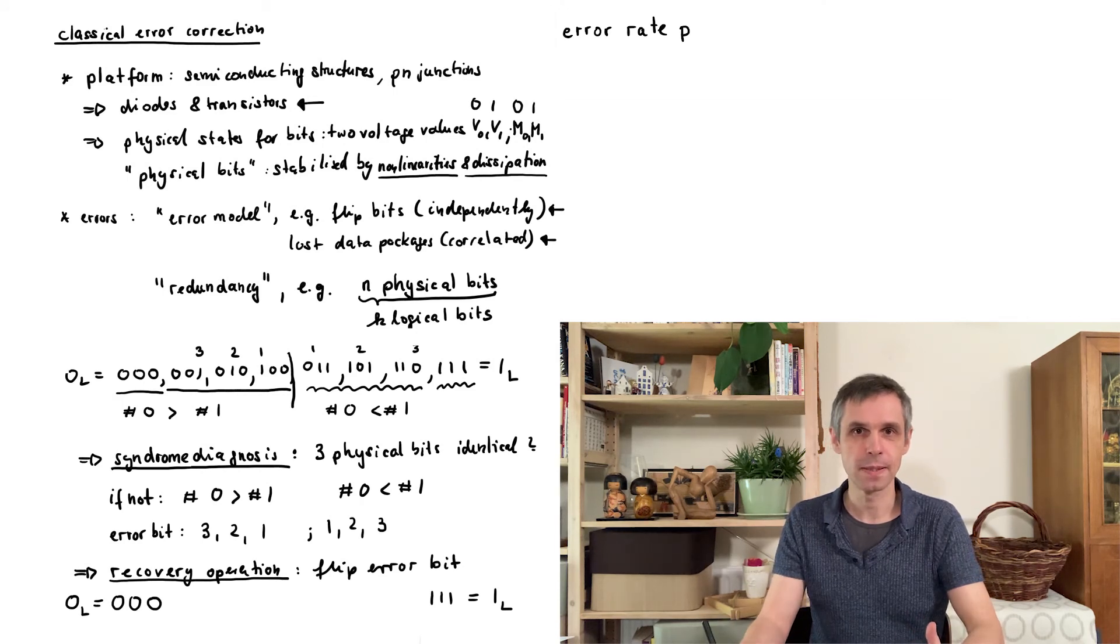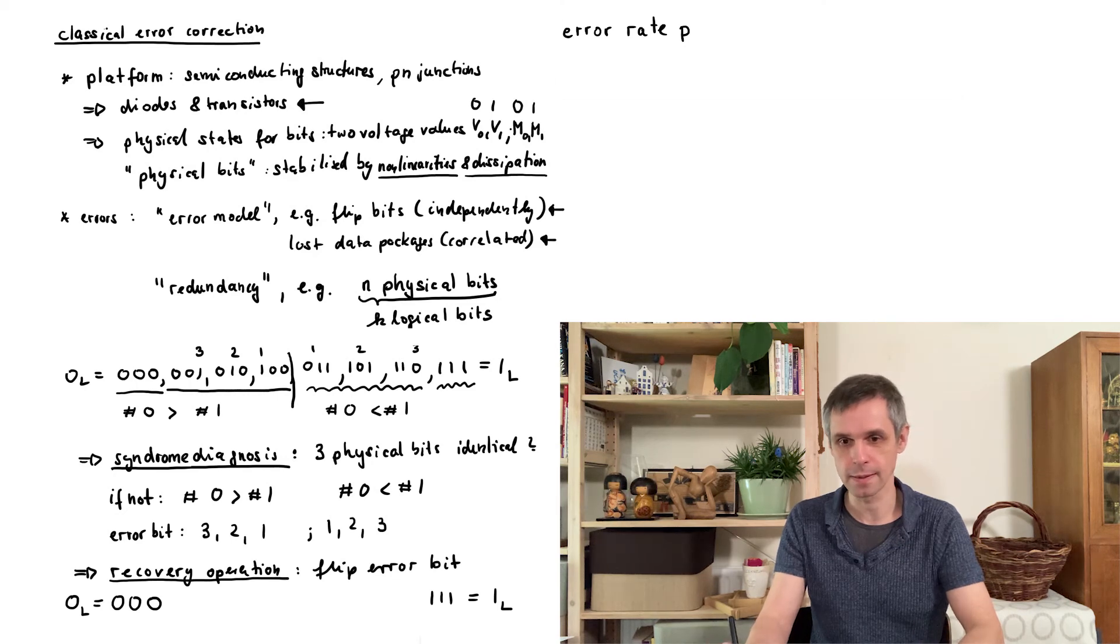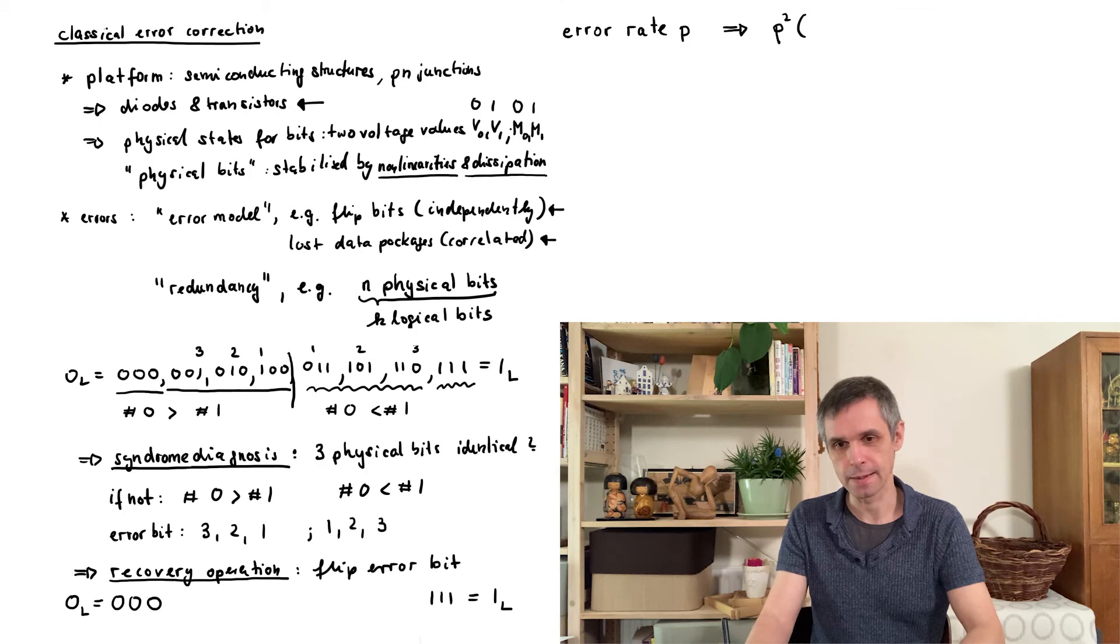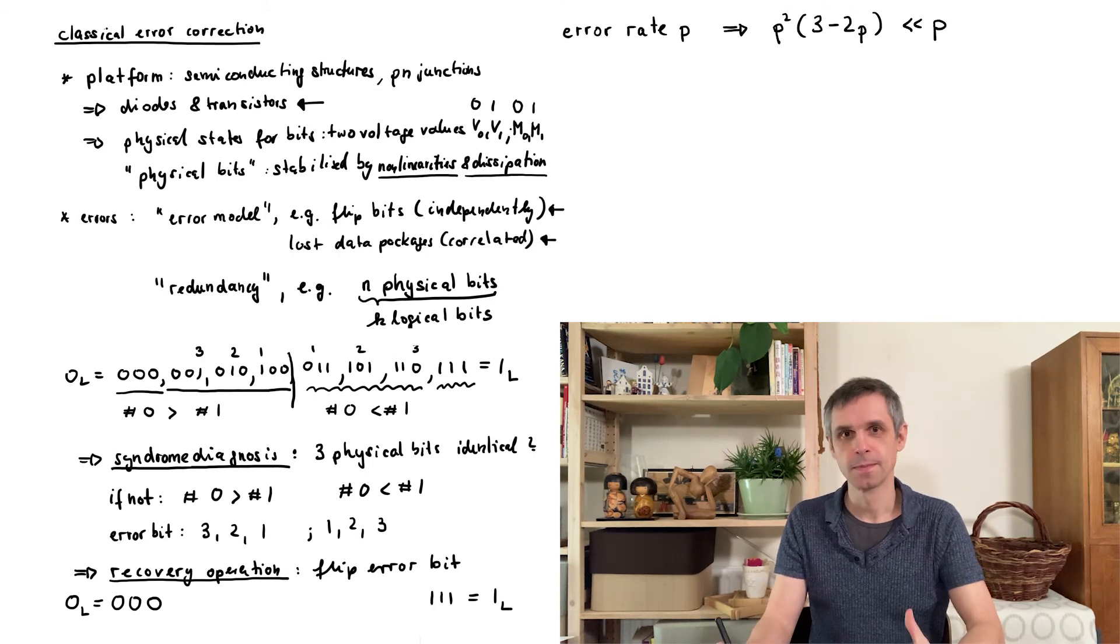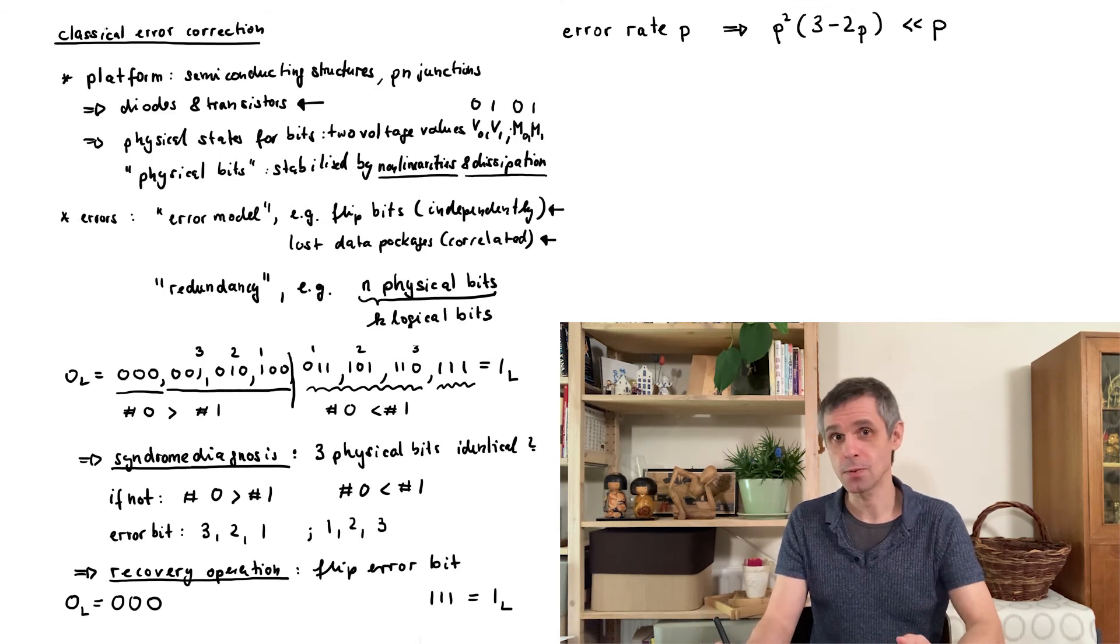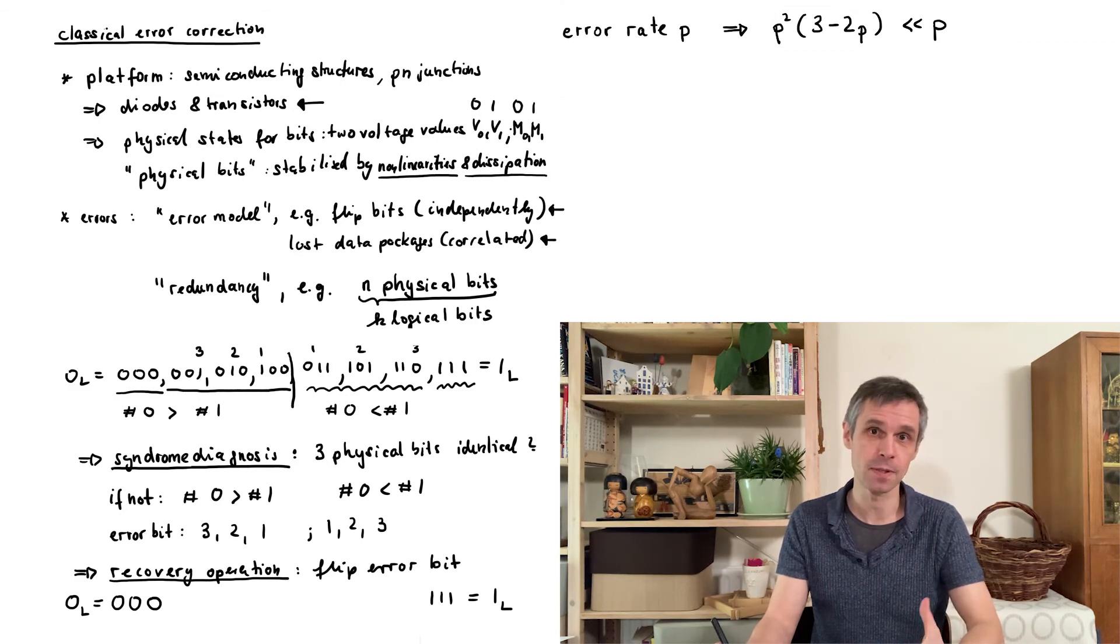Assuming that these errors are independent, one can then work out how likely it is that two physical bits within a single logical bit have been flipped. And one arrives at this rate here. And this is indeed then much less than p when p itself is small. However this is still not zero, so we still have to carry out these operations.